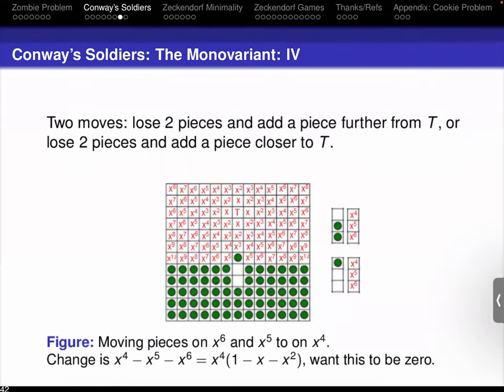However, if the target is at height five, the value of the target is X to the zero power, which is one. The only way to have a piece at the target is if there were no other pieces on the checkerboard. There is no way to get rid of infinitely many pieces in a finite amount of time — it can't be done.